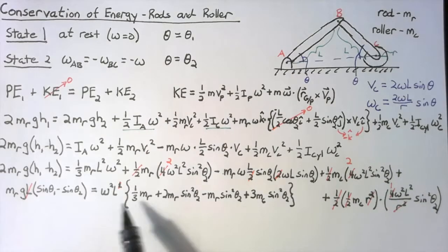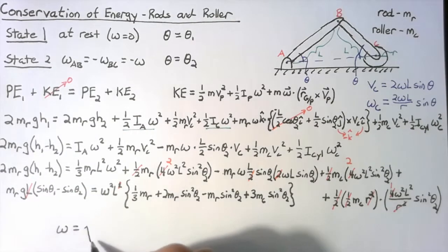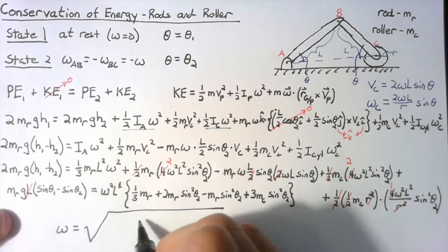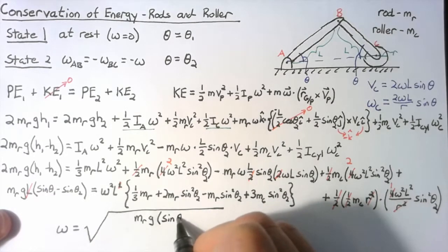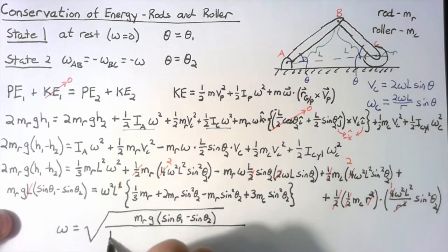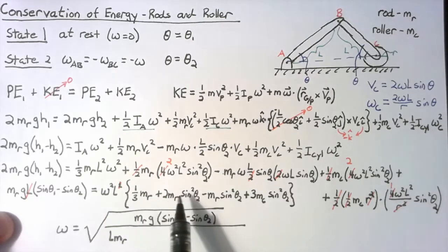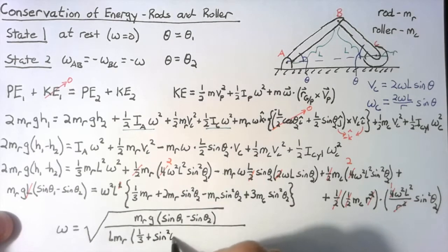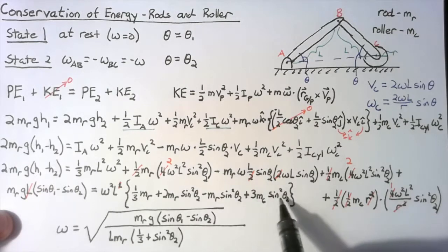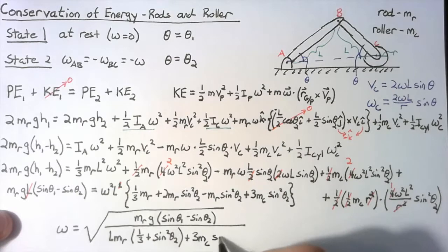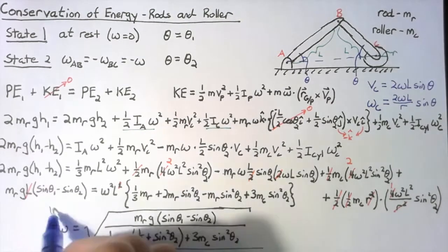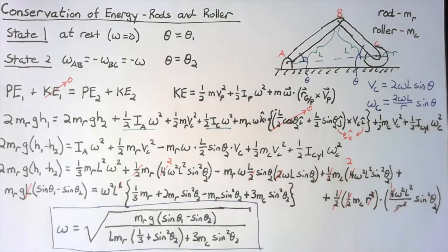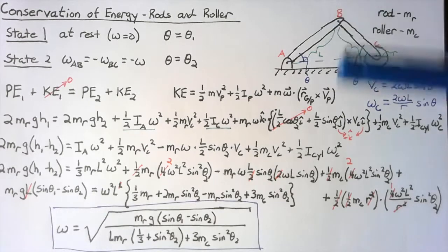Now we can solve for omega. Omega equals the square root of the left-hand side — mR*g*(sin(theta_1) - sin(theta_2)) — divided by L times the bracket [(1/3)*mR + mR*sin²(theta_2) + 3*mC*sin²(theta_2)]. This is our final answer. If we're given values for the initial conditions and the ending state, we can solve for the angular velocity of that final state.